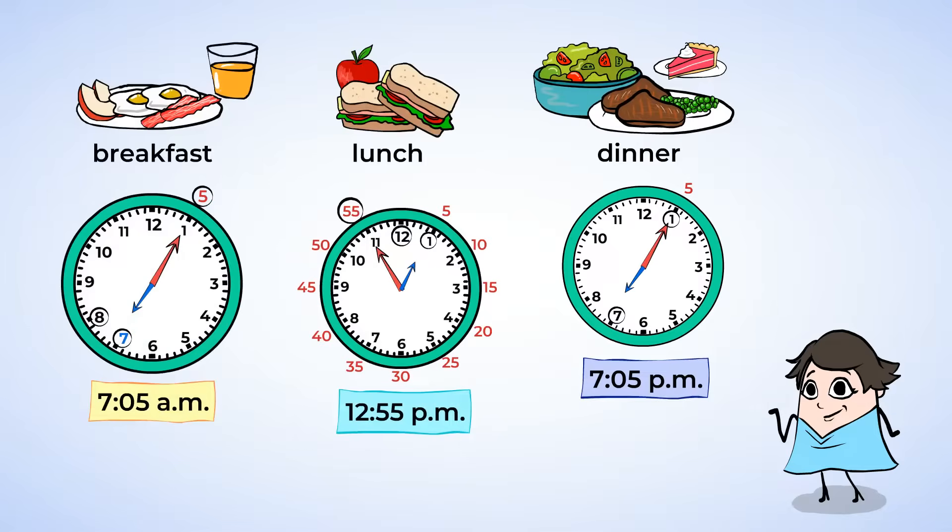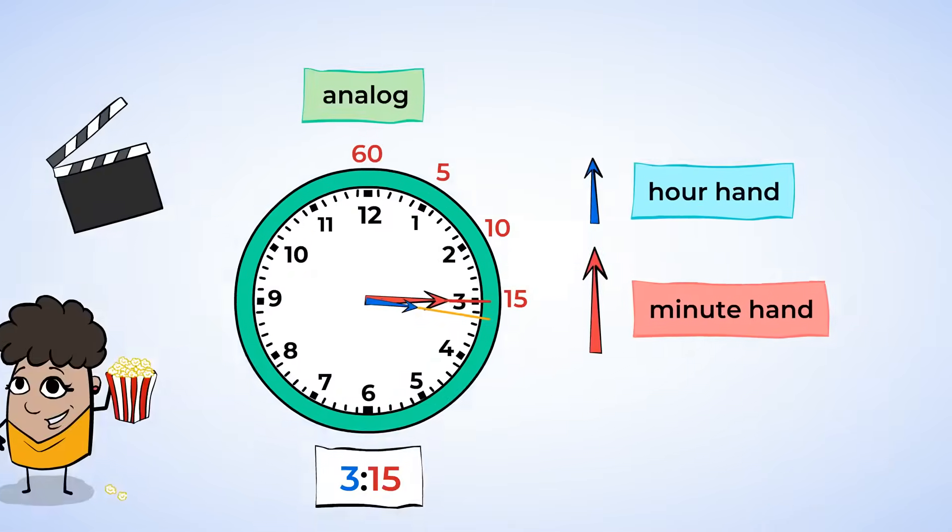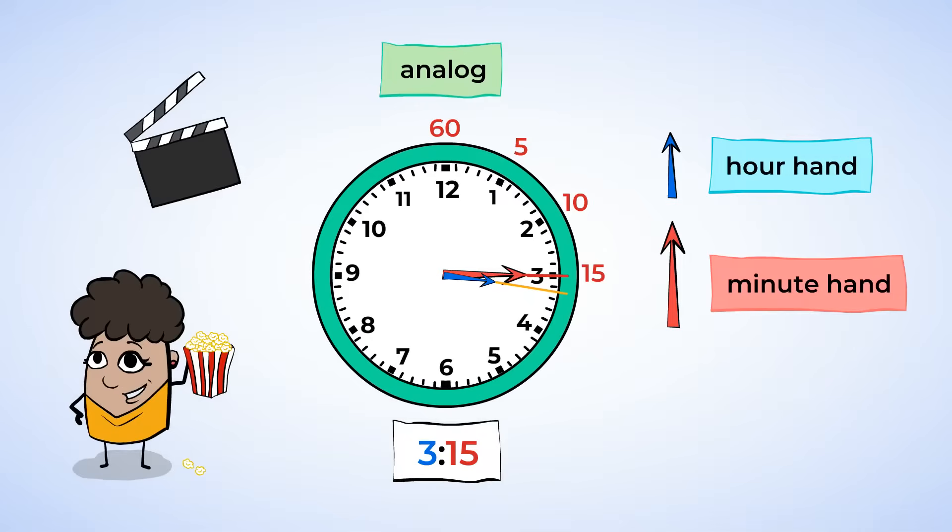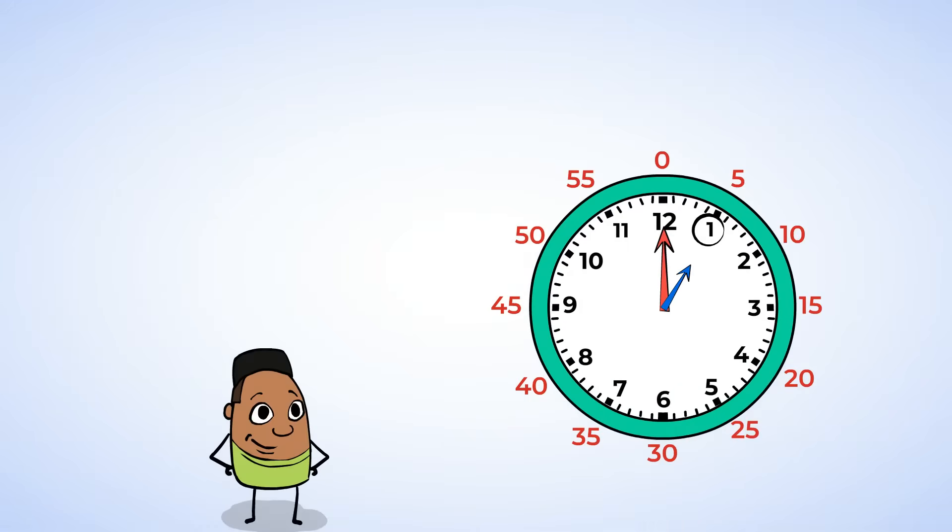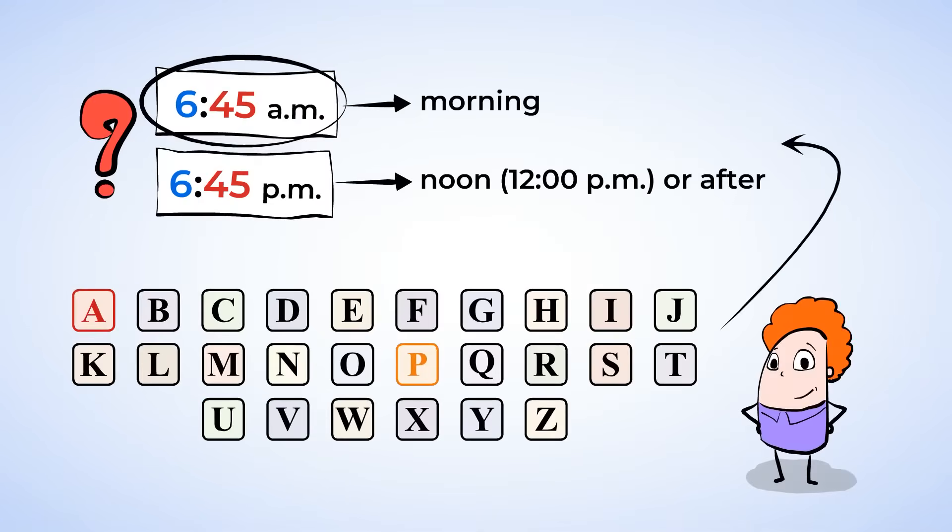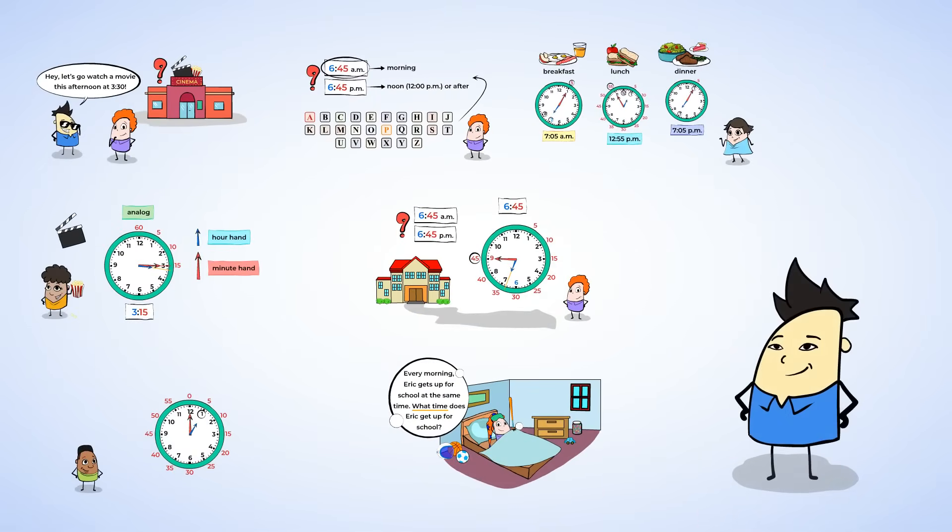Time flies when you're learning. You learned about telling time, and you learned how each number on the clock represents a number of hours, and a number of minutes. You can count by fives to figure out how many minutes. You also know that a.m. means the time is in the morning, and p.m. means that the time is at noon or later. See you soon!